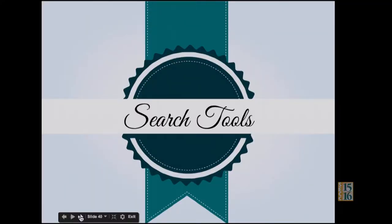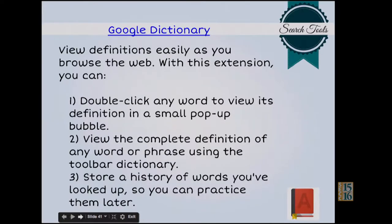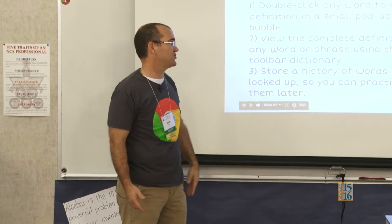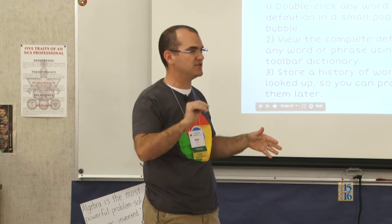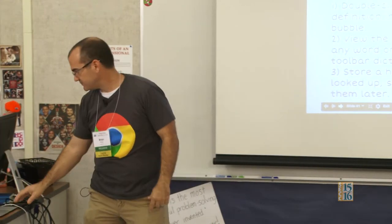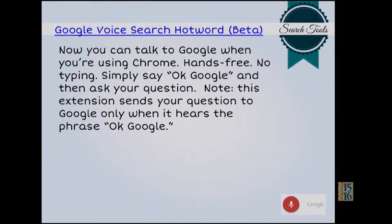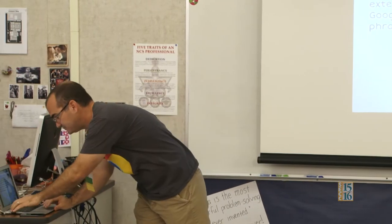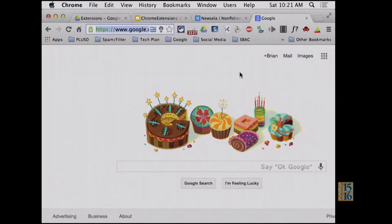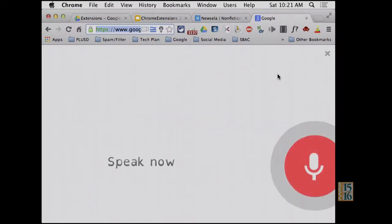A key thing also with Google is the powerful search engine, so there are some search tool extensions. Google Dictionary — which I desperately need — if there's any word you see, you can double-click on it and it's going to pop up a small bubble with the definition. You can also store it in history for future words. Google Voice Hotword — this is when you go to google.com with microphones. It's funny when we have microphones turned on in a class with Chromebooks. Let me demonstrate: okay Google, find hot dogs.